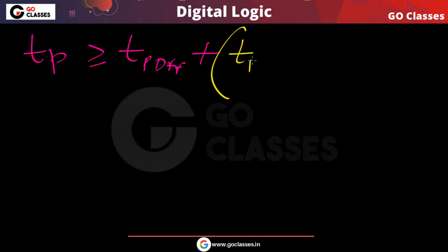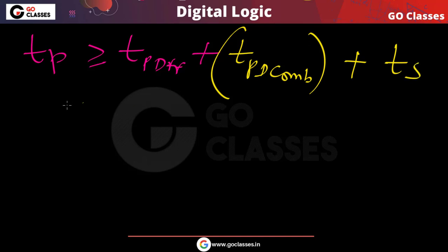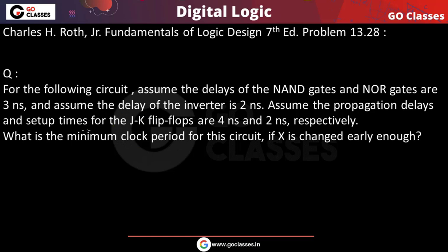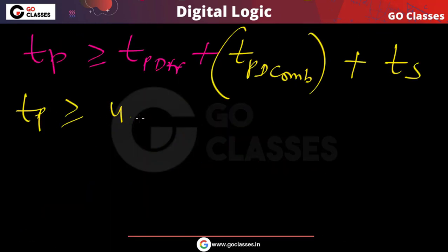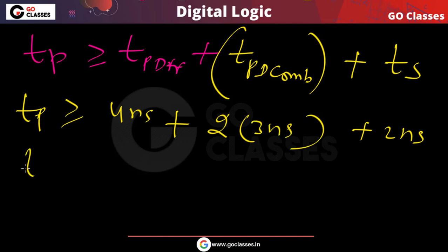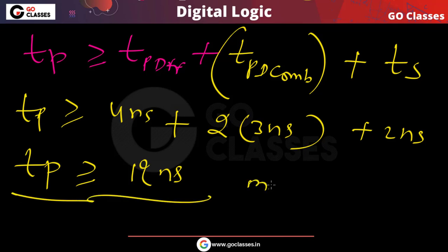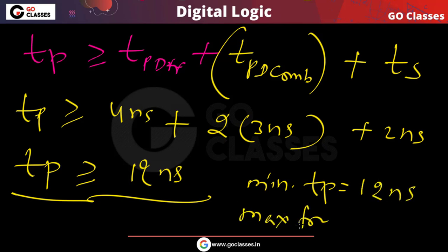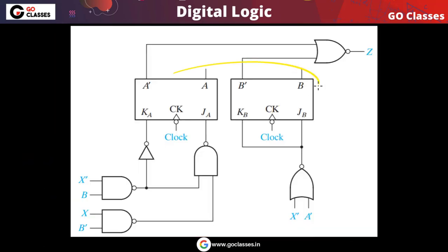Plugging in values: tp ≥ 4 ns (flip-flop propagation delay) + 2×3 ns (two NAND gates) + 2 ns (setup time) = 4 + 6 + 2 = 12 nanoseconds. So the minimum clock period is 12 nanoseconds, and the maximum frequency is 1/12 GHz.